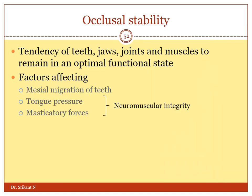The stability of the occlusion is decided mainly by the neuromuscular integrity. The tongue and the labial or buccal muscles decide the neutral zone where the teeth find their final occlusion. It is also related to the pattern of the jaw, teeth, and the joints.